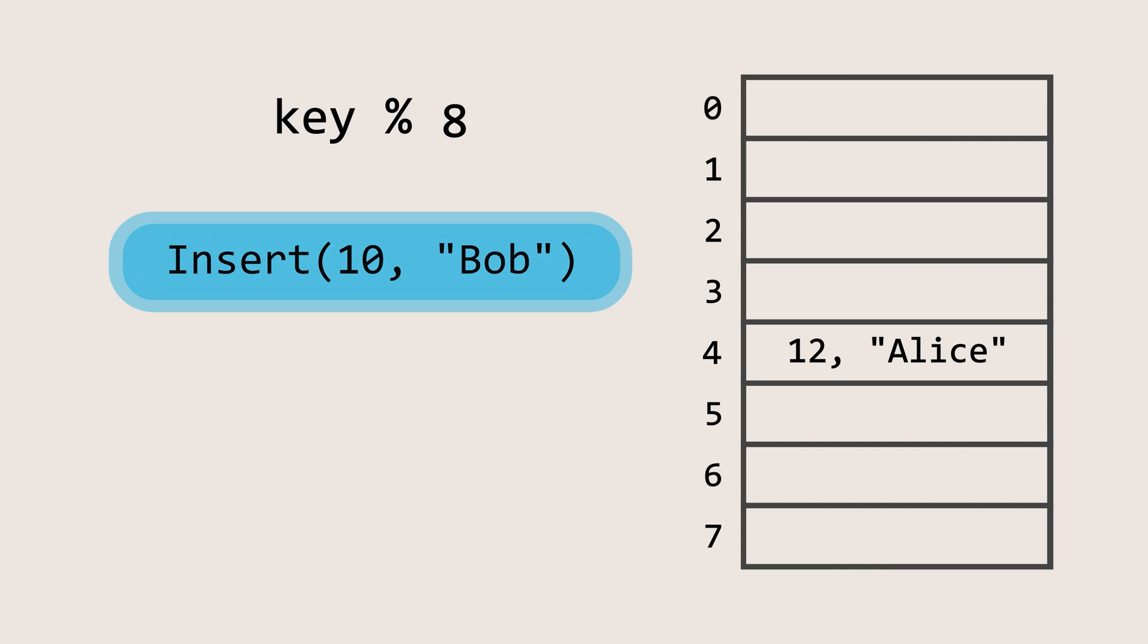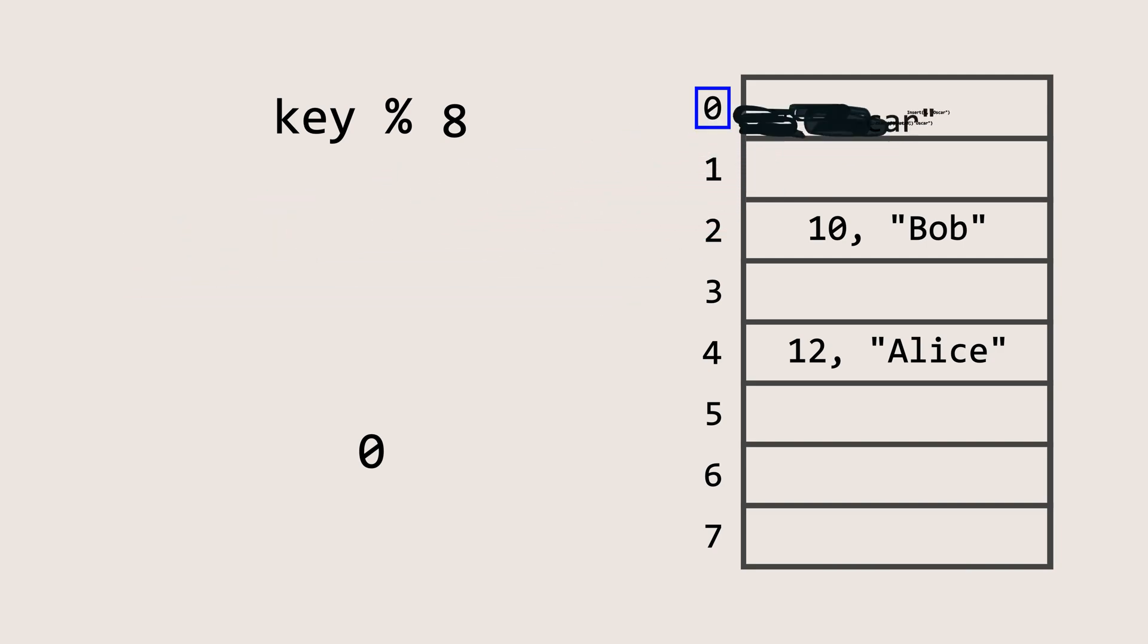Next, let's insert the value Bob with the key 10. Passing the key 10 into the hash function gives an output of 2. This means we need to store the key-value pair at index 2 of the array. Next, let's insert the value Oscar with the key 8. Passing the key 8 into the hash function gives an output of 0. This means we need to store this key-value pair at index 0 of the array.